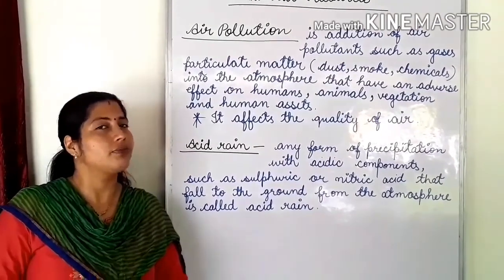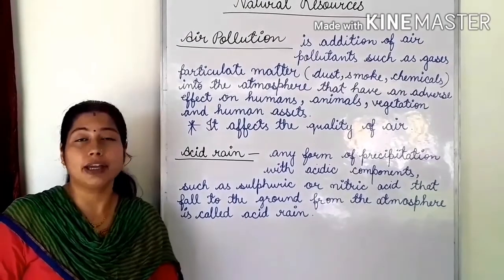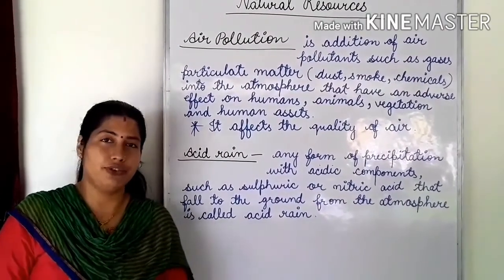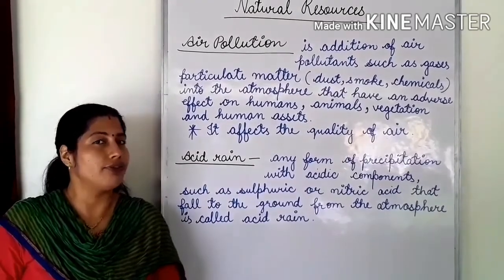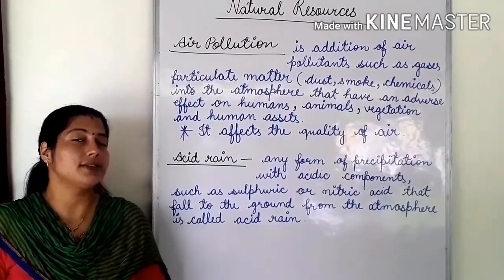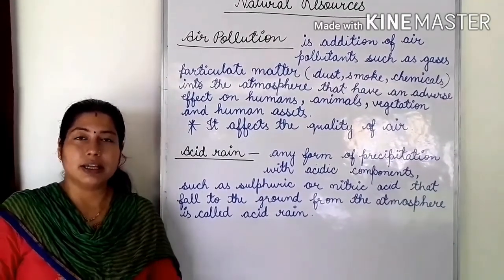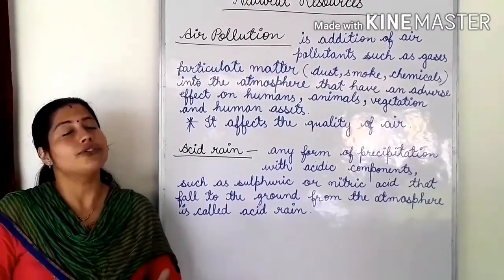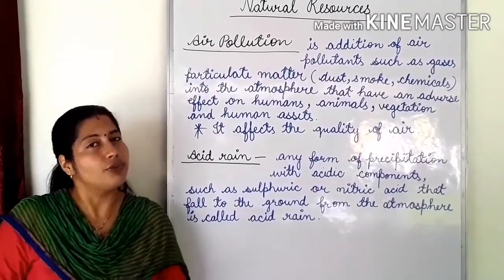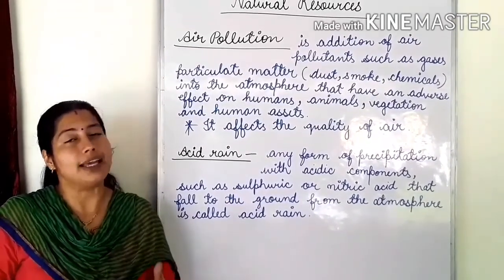Now you must be thinking: what are the causes of air pollution? Human activities are a big cause. Whenever we burn any fossil fuel, it produces harmful gases. Fossil fuels contain nitrogen and sulfur in small amounts, and when they burn they produce oxides of sulfur and nitrogen. These substances are not only harmful for inhalation — they dissolve in the air and form acid rain, which is very harmful.